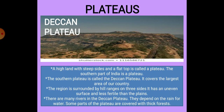Plateaus: A high land with steep sides and a flat top is called a plateau. The southern part of India is a plateau. The southern plateau is called the Deccan Plateau. It covers the largest area of our country. The region is surrounded by hill ranges on three sides. It has an uneven surface and is less fertile than the plains. There are many rivers in the Deccan Plateau.